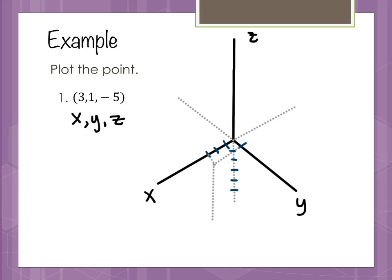Going down 5 from that XY position, we draw lines parallel to the earlier ones, essentially making a three-dimensional box. You've gone over 3 in the X direction, over 1 in the Y direction, and then down 5 in the Z direction. We end up at that bottom coordinate — the ordered triple. We can label this point capital A.